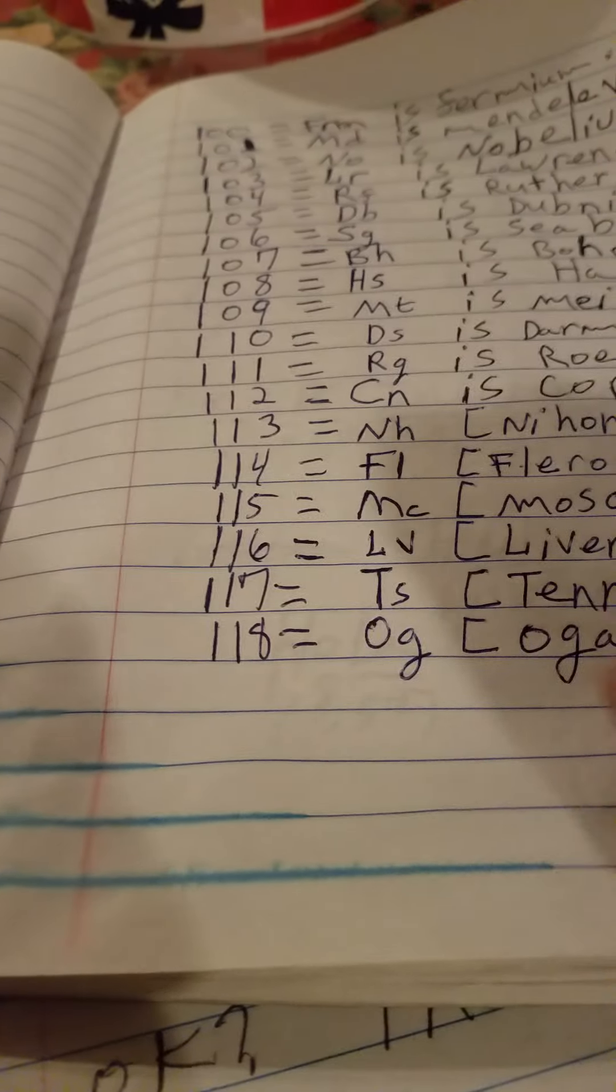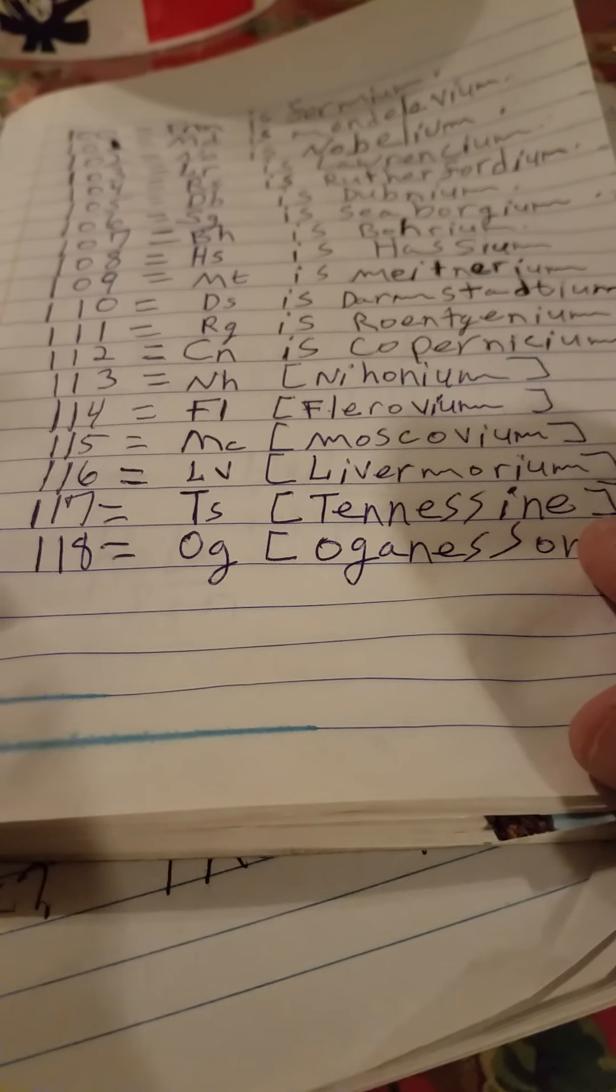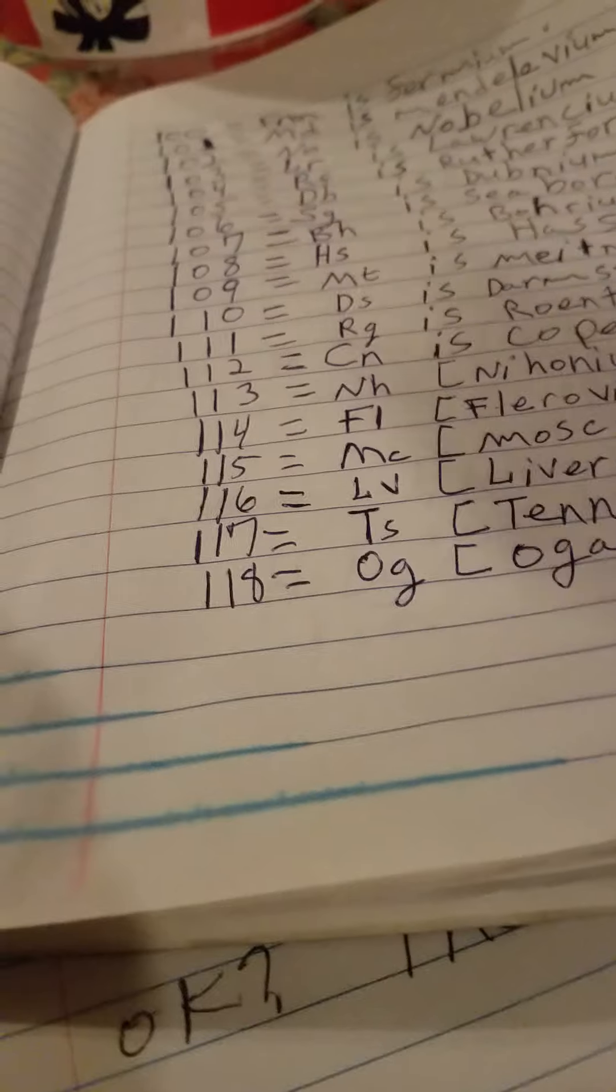Now 118 is the heaviest element, I think. And then comes 117, Tennessine - that's next to the heaviest. So I'll write it down in the description box below.